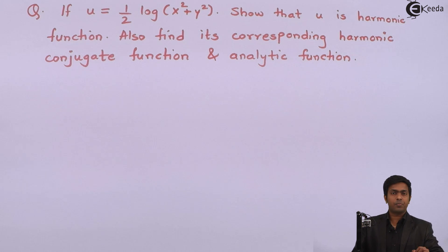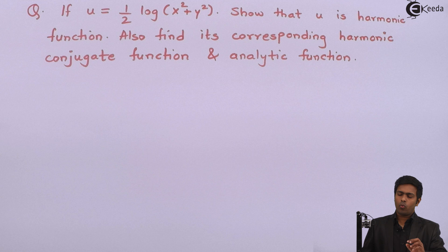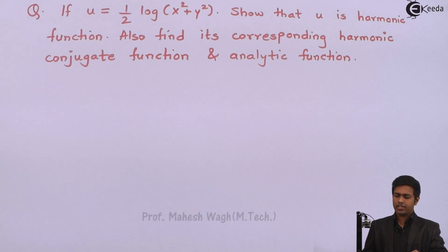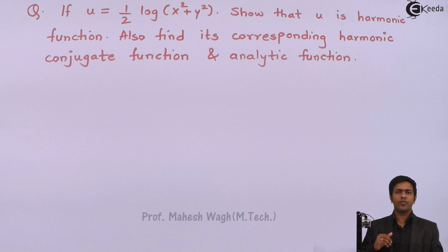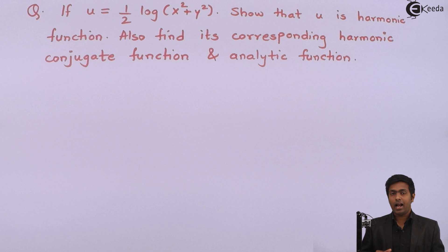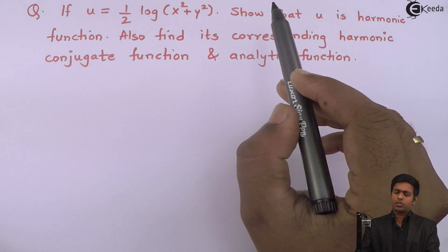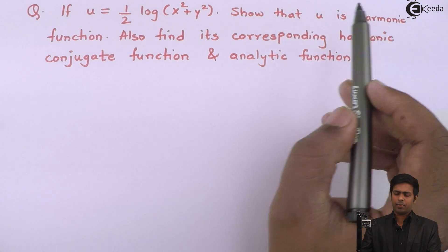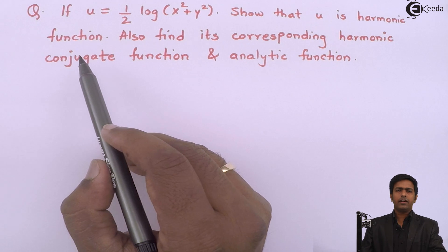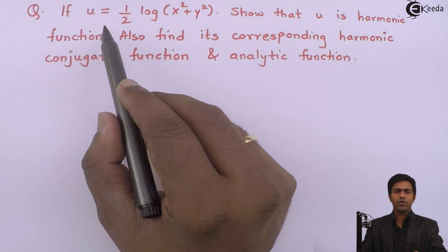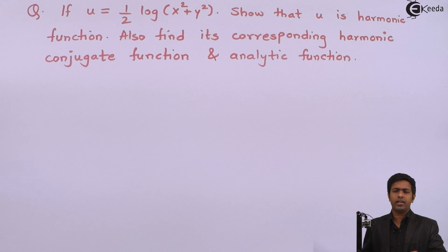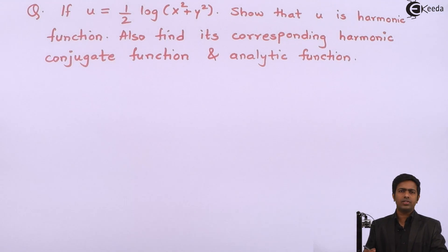Hello friends. In this problem, u is given as 1/2 log of (x² + y²) and we have to show that u is a harmonic function, find its corresponding harmonic conjugate function, and the analytic function. Let us start with part one: show that u is harmonic. For that, we will prove the Laplace equation for u. If the Laplace equation is satisfied by u, then we say u is harmonic.